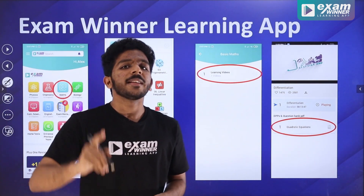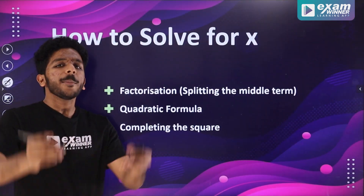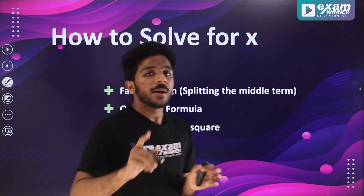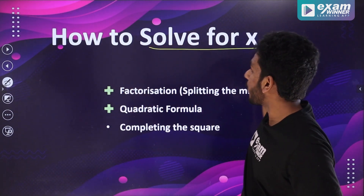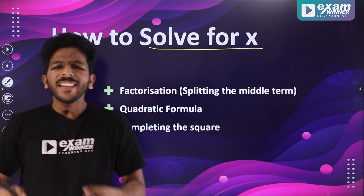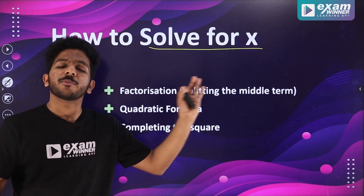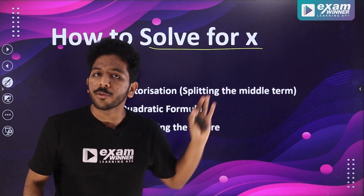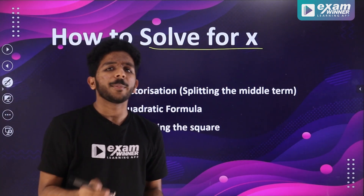What quadratic equation? How to solve this quadratic equation? You always say solve for x. If you have the value of x, then x squared plus bx plus c is equal to 0. That's the meaning.